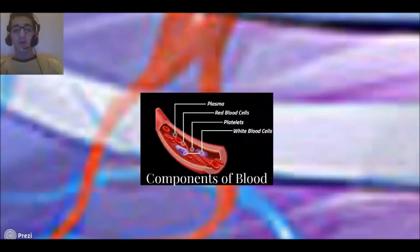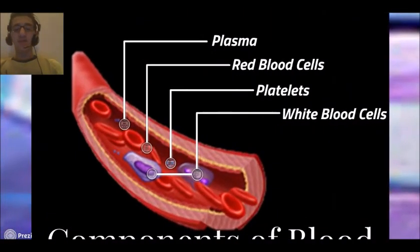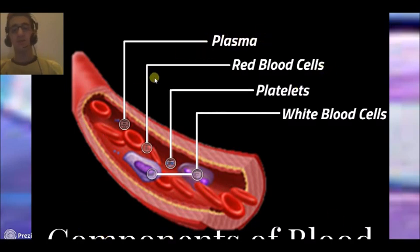Now inside the artery, you'll see the components of blood. Inside there you'll find plasma, red blood cells, platelets, and white blood cells.